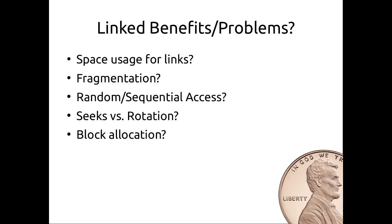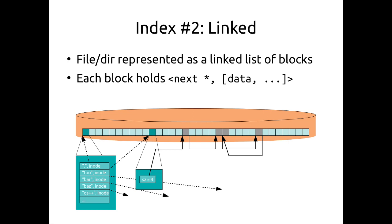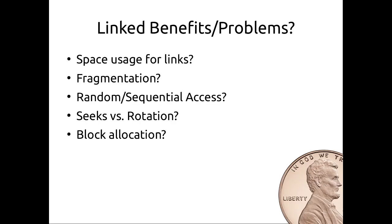Sequential access with linked allocation is not great because we must make requests block by block without leveraging disk parallelism. Random access is worse — to reach the 6th block we must read through the first five. For seeks versus rotation: if blocks are allocated contiguously it could be decent, but without multiple pending requests we can't fully exploit rotation. If blocks are scattered across disk there are many seeks. Growing a file is simple — just allocate a block anywhere and link it to the last block.